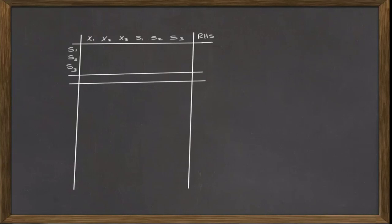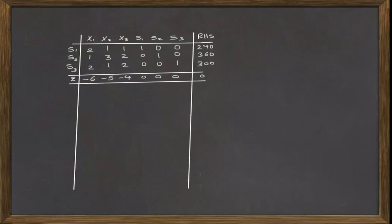The number of basic variables is equal to the number of constraints of the problem. Inside the table, we enter the coefficient of decision variables in the constraint, as well as the objective function coefficient in the row of z.